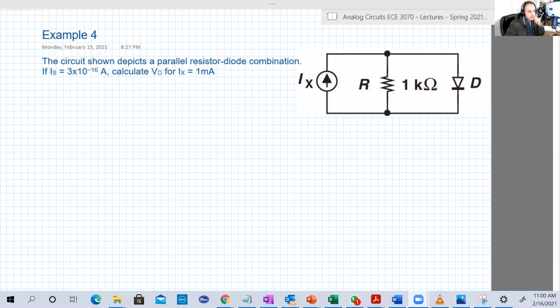Hello guys, so this is the third part of lecture seven. We continue with examples on diode circuits and solving them using the exponential model.